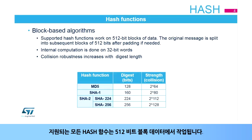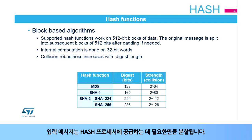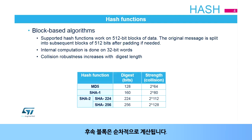All supported hash functions work on 512-bit blocks of data. The input message is split as many times as needed to feed the hash processor. Subsequent blocks are computed sequentially.